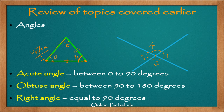Now let us recollect some basic types of angles. There is an acute angle, which is an angle between 0 and 90 degrees. An acute angle could look something like this. We could draw the ray at many positions — all the way until we reach 90 degrees.